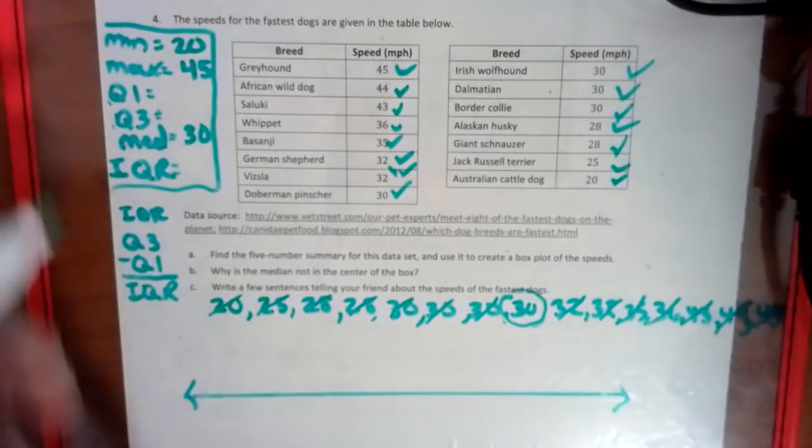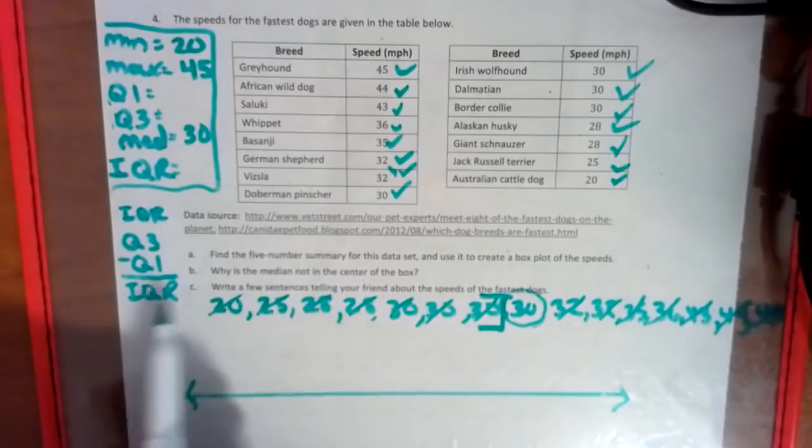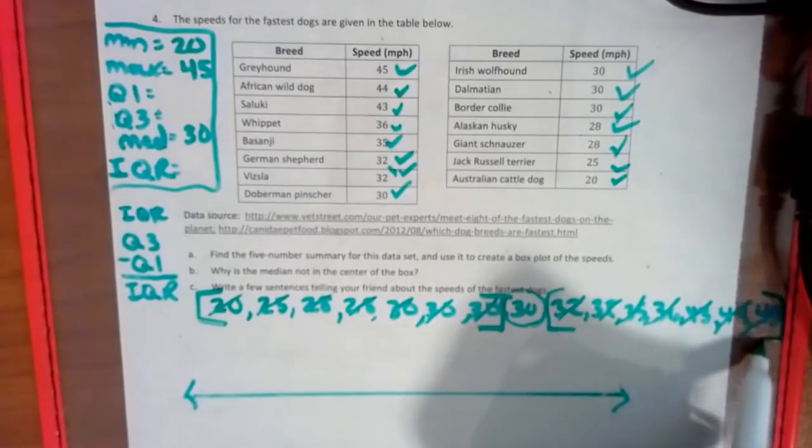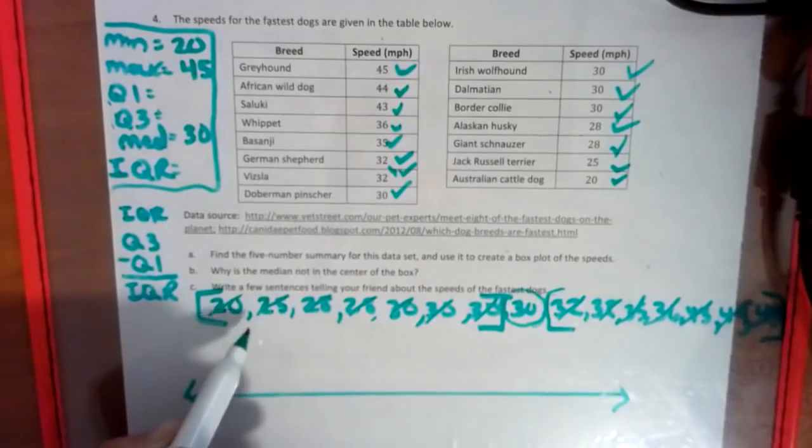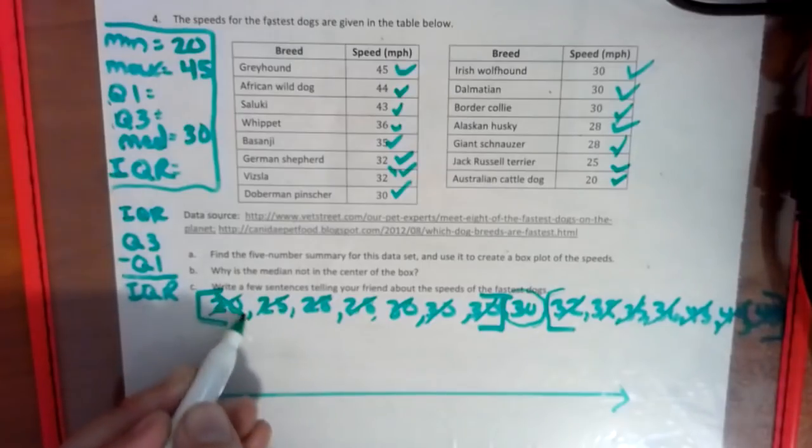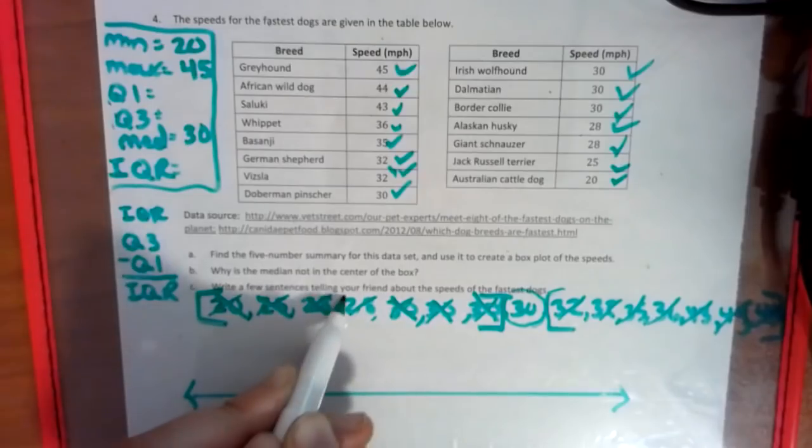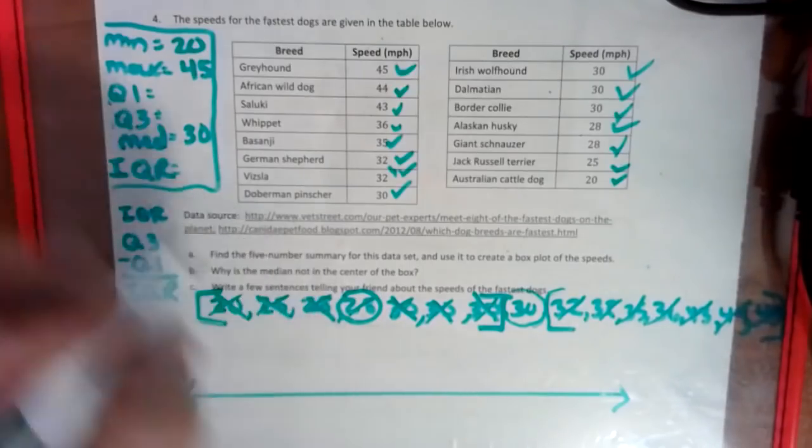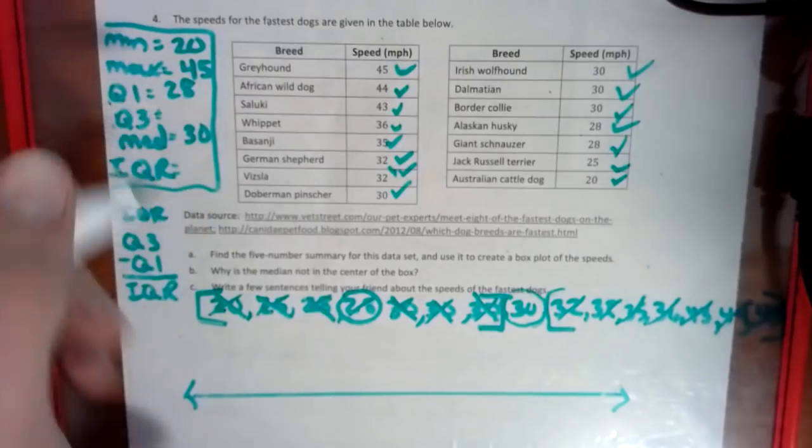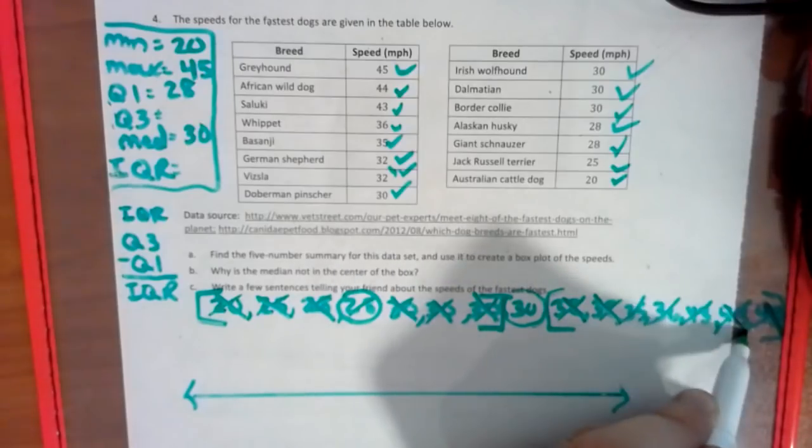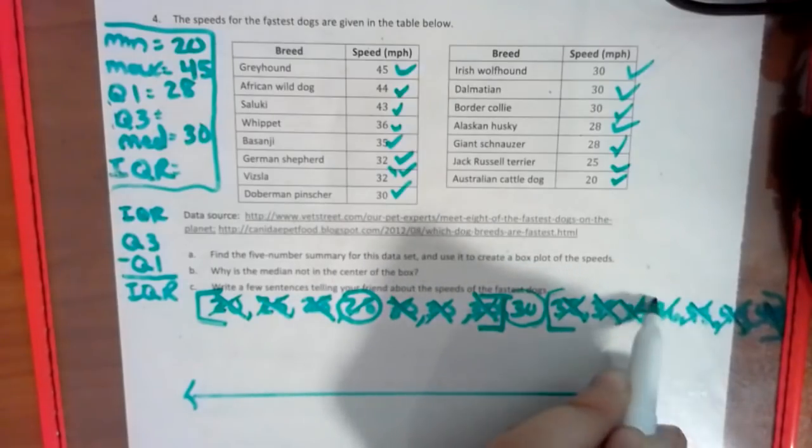So now in order to find my Q1, I have to take the data that's below it and I have to find the middle of that. And for my Q3 I do the same. So I'm going to strike it the opposite way so I know which ones I've cut. And my center here is a 28, so that is my Q1. My Q3, little big, little big, is 36.